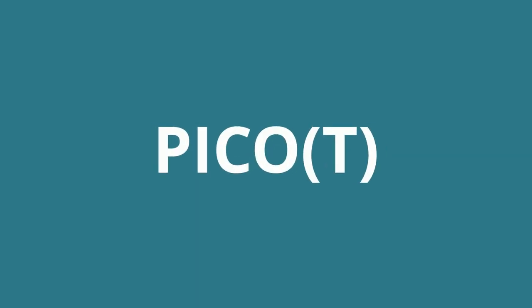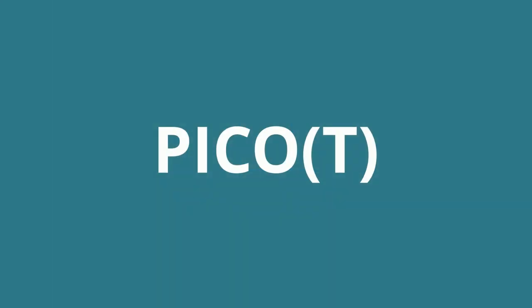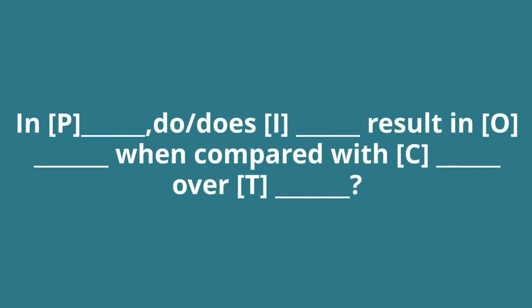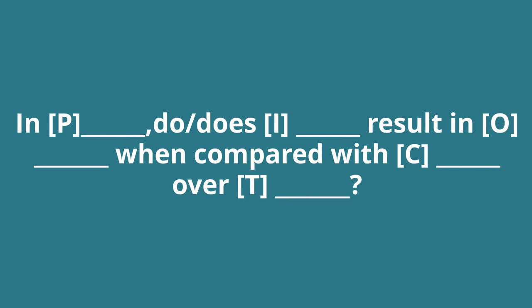Here's an example. A question using PICO-T could look like: in P, do or does I result in O when compared with C over T?